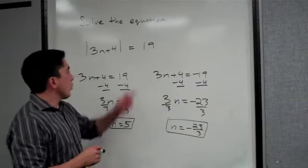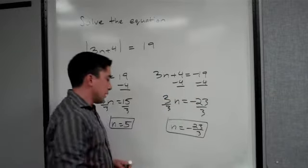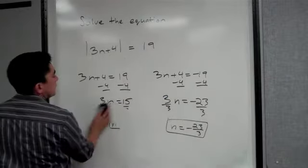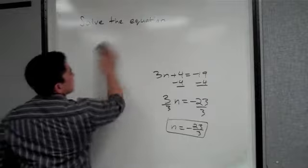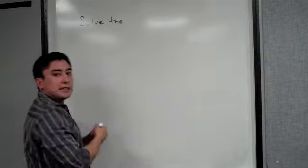So again, when there's an equal sign, set it equal to the positive, set it equal to the negative. Now, the other one wasn't an equation. The next two problems, because we only did three examples in class.